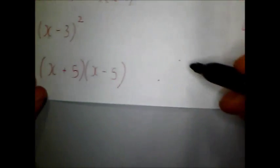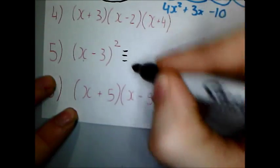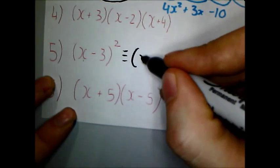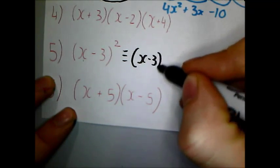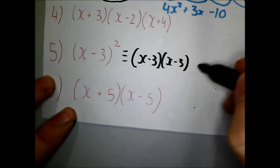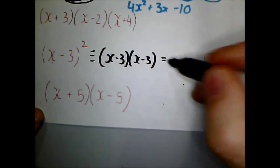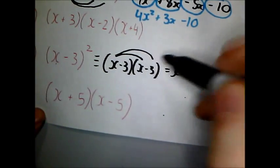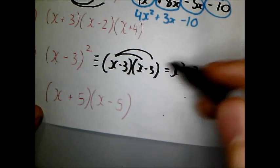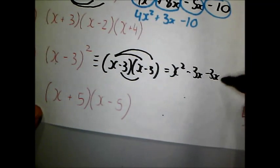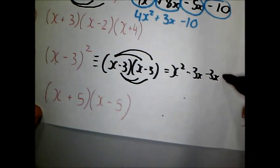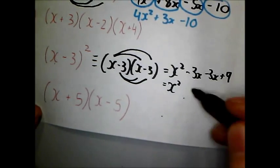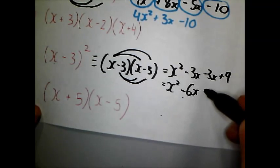Question 5. Now I want to multiply x minus 3 by itself. So first thing I'm going to do is rewrite it. So x minus 3 is multiplied by itself. And now do exactly my same method. So x times x, x squared. x times negative 3, negative 3x. Negative 3 times x, negative 3x. And negative 3 times negative 3 is positive 9. Careful with that one. And then simplify. x squared minus 6x plus 9.